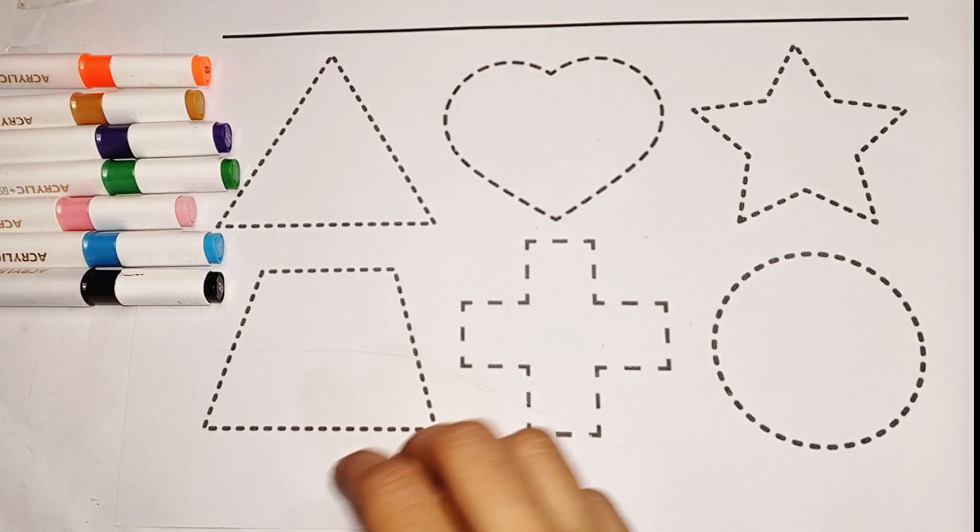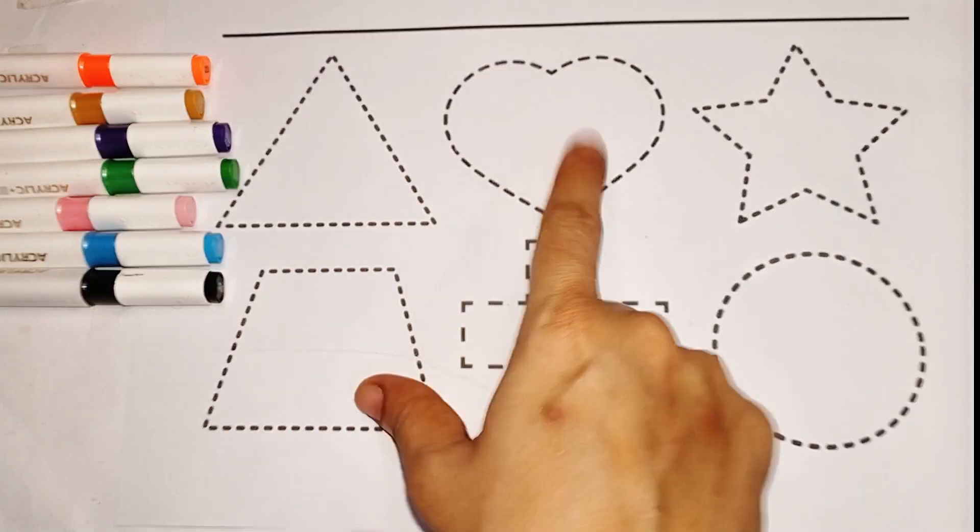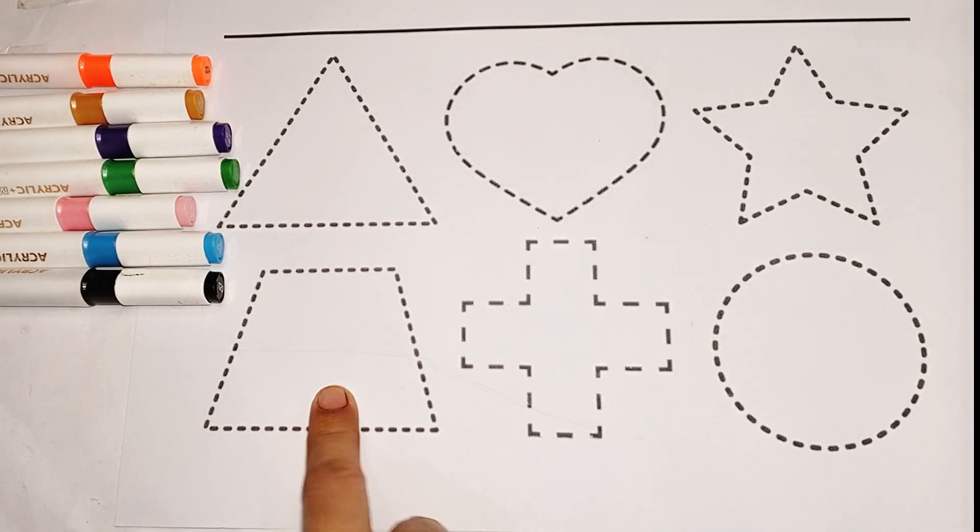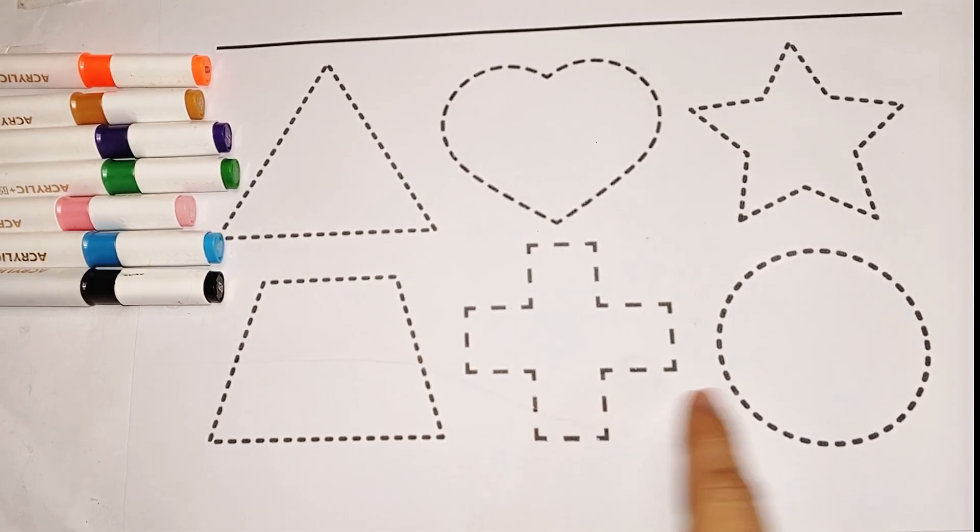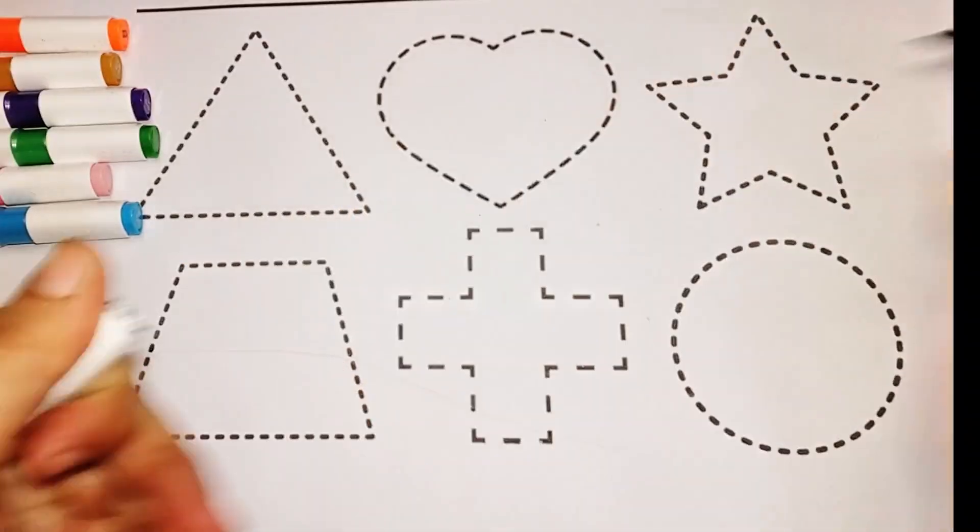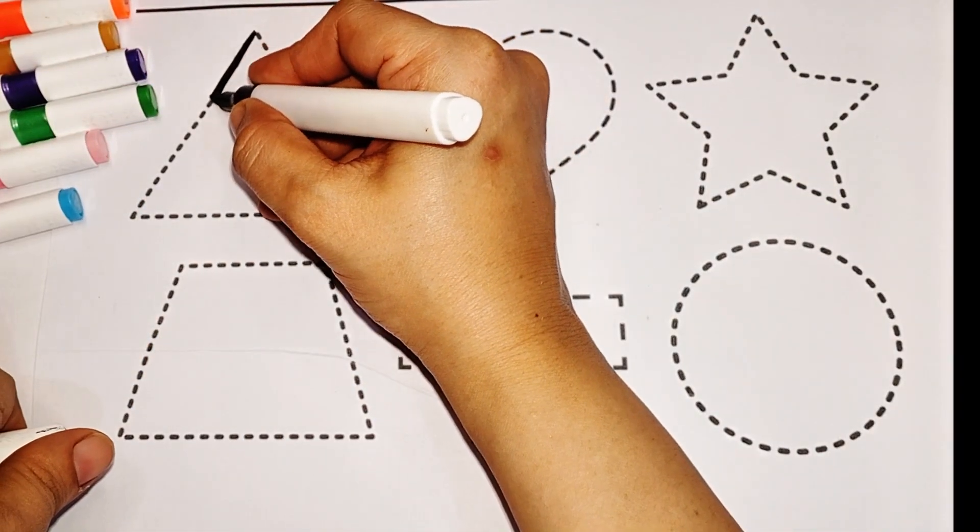Let's start tracing. Triangle, heart, star, trapezoid, cross, and circle. First I am tracing triangle.